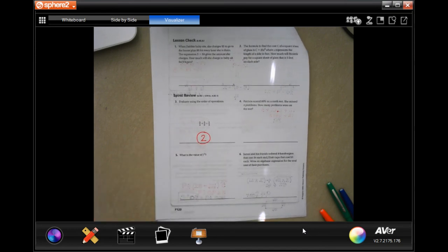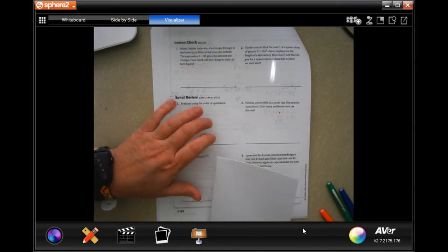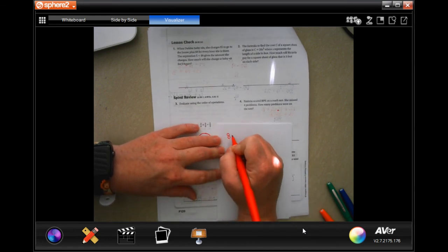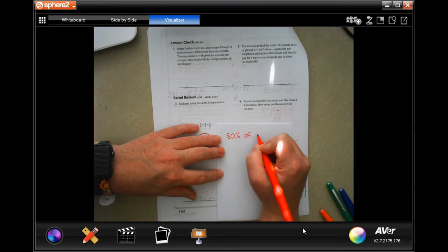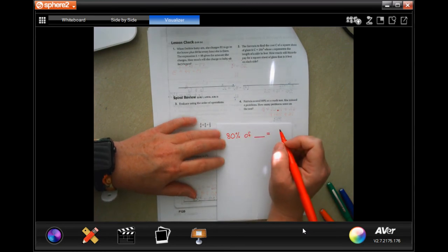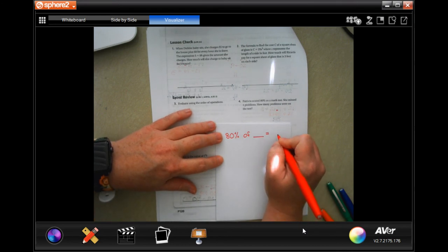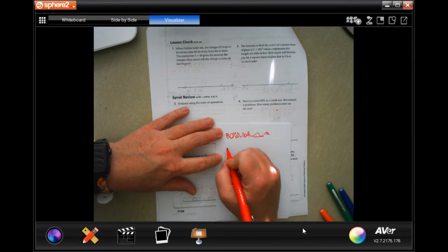Ready? So now we're going to go to number 4. Patricia scored 80% on a math test. She missed 4 problems. How many problems were on the math test? Well, 80% of blank. Oh, gotcha. So hold on just a second. Let me redo this.